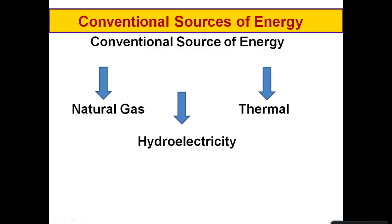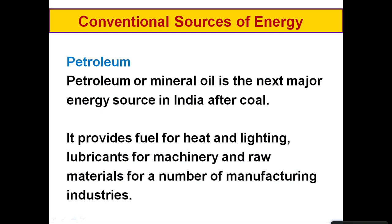When we understand conventional sources of energy, there are three major sources: natural gas, hydroelectricity, and thermal — which includes both coal and water as hydroelectricity. Moving on, petroleum and mineral oil is the next major energy source in India after coal.